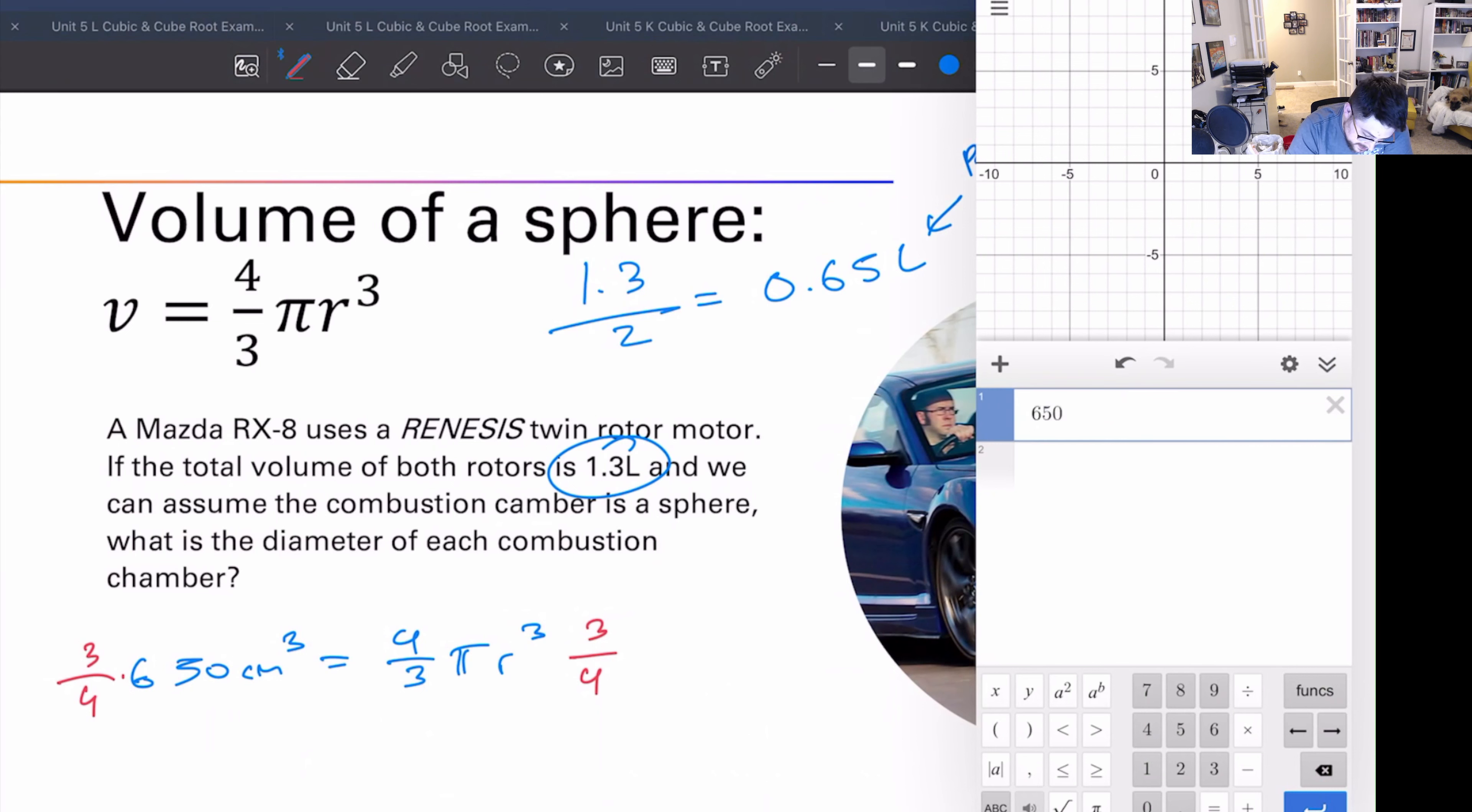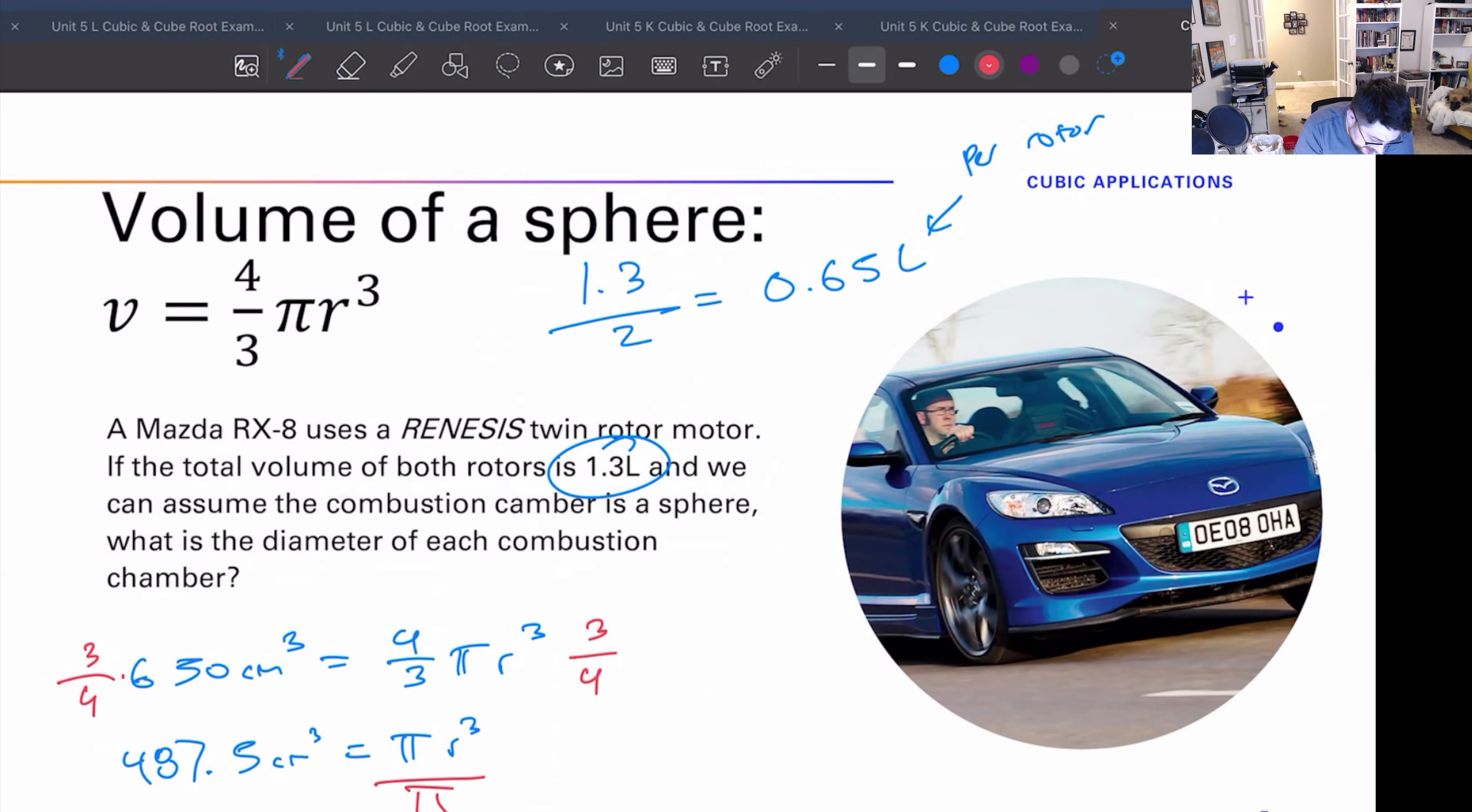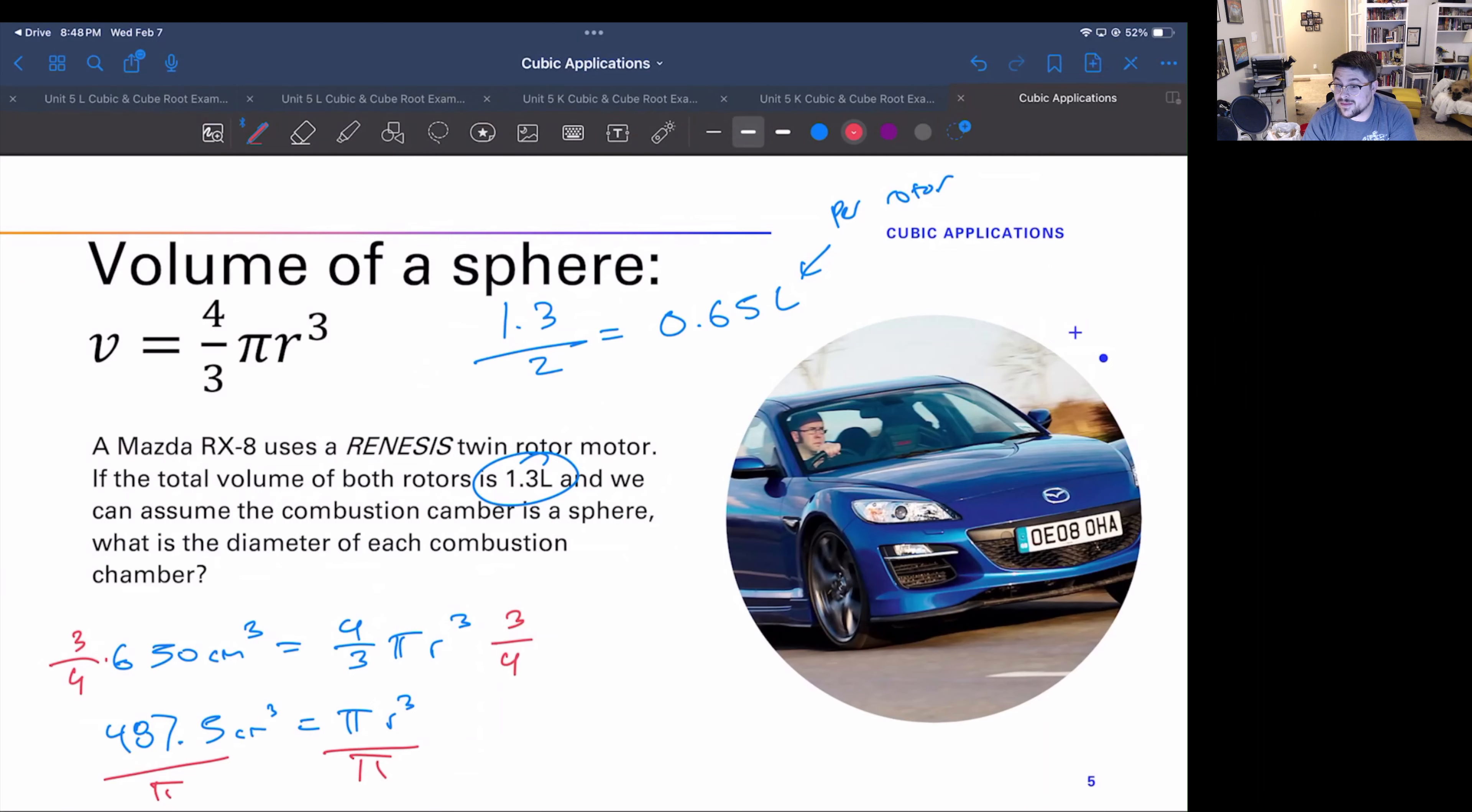650 times three over four, we get 487.5 equals pi r cubed. Alright, now we need to get rid of the pi, so let's divide by pi, by pi. There we go, I can see the whole thing by pi, and that gives us radius cubed on the right side.